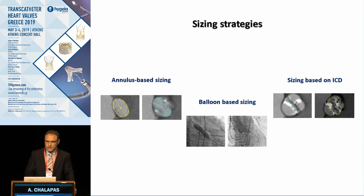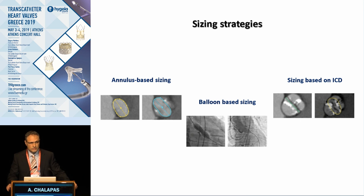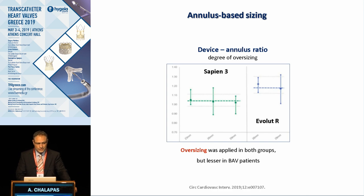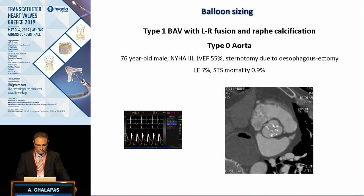CT analysis provides a lot of information, and there are different sizing strategies. We have already seen the balloon-based sizing strategy. There is also the annulus-based sizing strategy, where we take measurements at different levels of the aortic root from CT and can size based on the intercommissural diameter 4 mm above the annulus. When sizing based on the annulus, we need some oversizing, which must be less than 7 to 10%, and this is more important for Evolut valves.